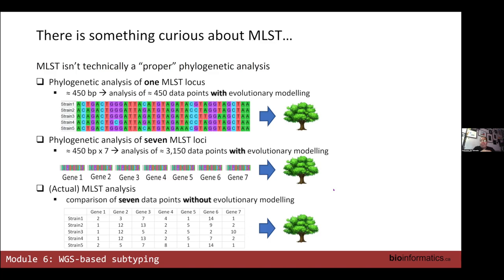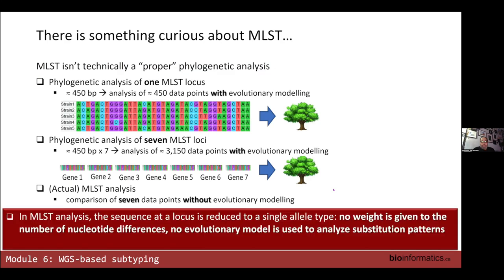But actual MLST analysis involves none of that. In MLST we have seven genes, we generate the sequence data, but then we collapse that down to an allele number — each different allele gets an allele number. The collection of seven allele numbers becomes the profile. What we analyze is how similar profiles are at seven points. Because we're not really dealing with sequence data anymore, we're just literally comparing similarity at seven data points.